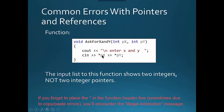Basically it's saying you can't dereference an int. You can dereference a pointer to an int, but you can't dereference an int. Even though we named it px — which implies it's a pointer — without the asterisk in the function definition, it's not really a pointer.